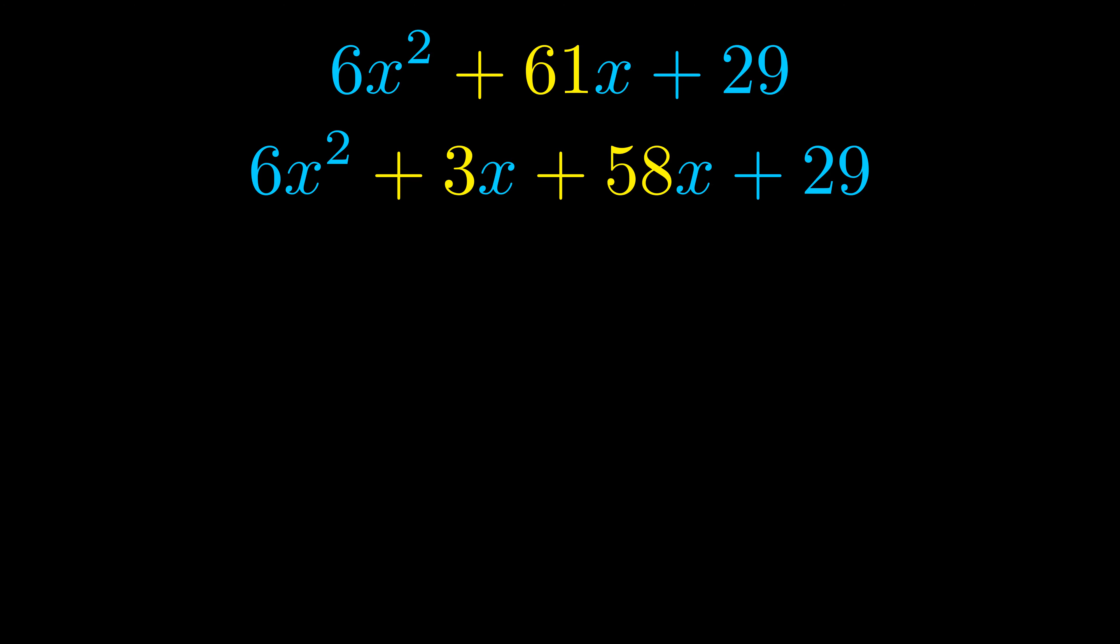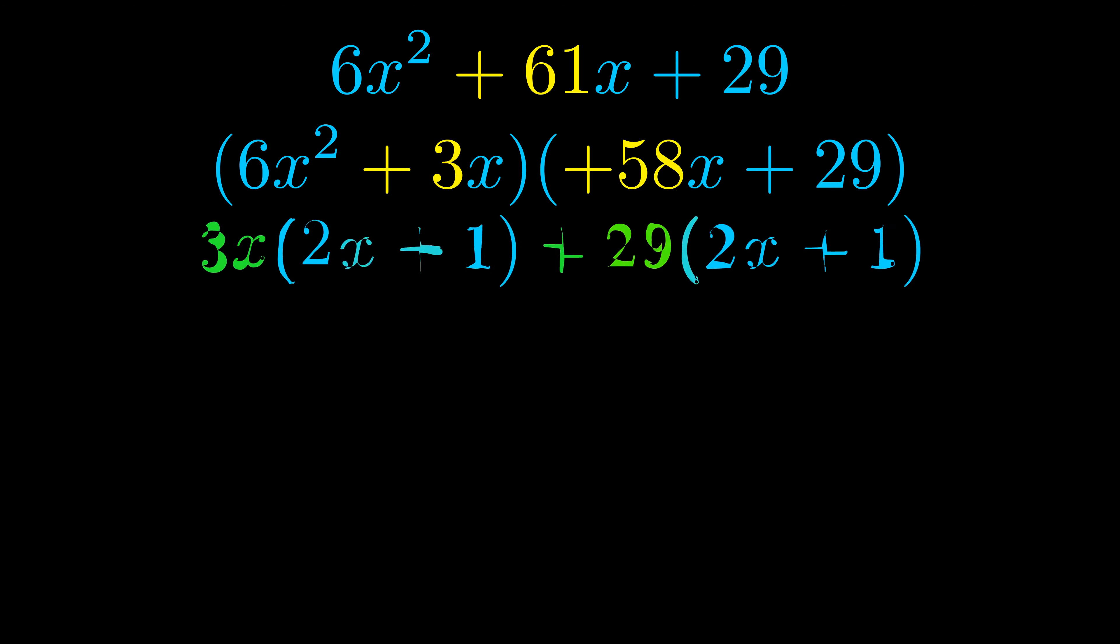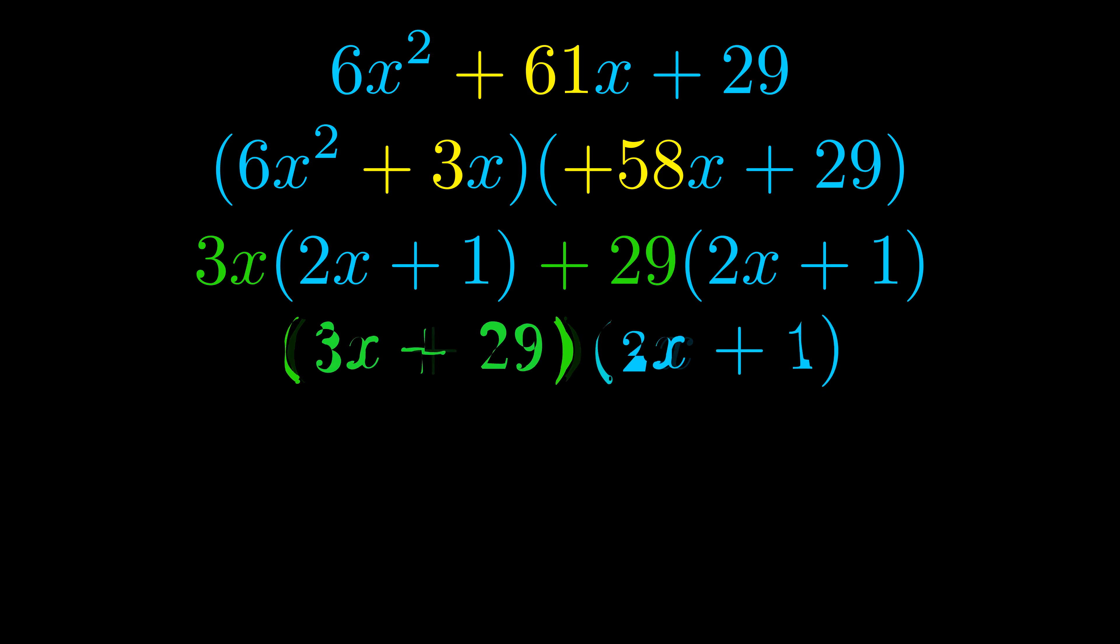Once we've done this we go ahead and we put parentheses around the first term and the last term and we do that so that we can take the greatest common factor out of both terms. We can see the greatest common factor is now outside in green. Notice also how what remains inside of the parentheses is the same in both cases. The blue values are the same.